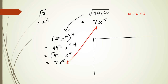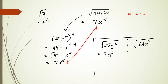Another example: square root of 25y to the power of 6. Square root of 25 is 5, and square root of y to the power of 6 is y cubed. One more: square root of 64x squared y to the power of 6. Square root of 64 is 8, square root of x squared — 2 divided by 2 is 1 — so just x, and 6 divided by 2 is 3, giving y cubed. Final answer: 8xy cubed.